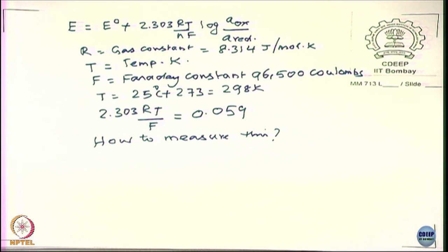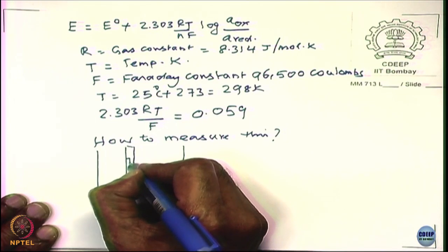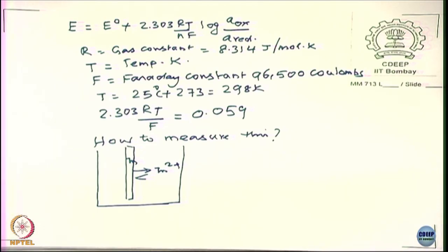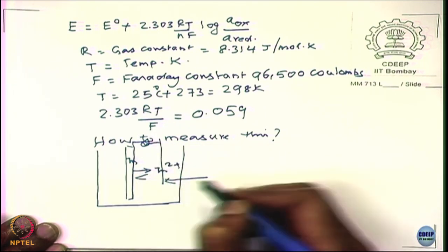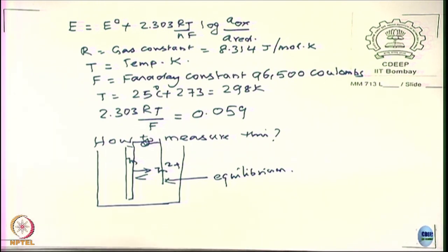We saw in the last class that it is not possible to measure the absolute value. Why? If you are going to use another probe in the electrolyte — for example, if I consider an electrochemical system with zinc in equilibrium with zinc ions — to measure it I need a probe. The moment I put a probe there and measure with a voltmeter, that probe will also have its own equilibrium potential.